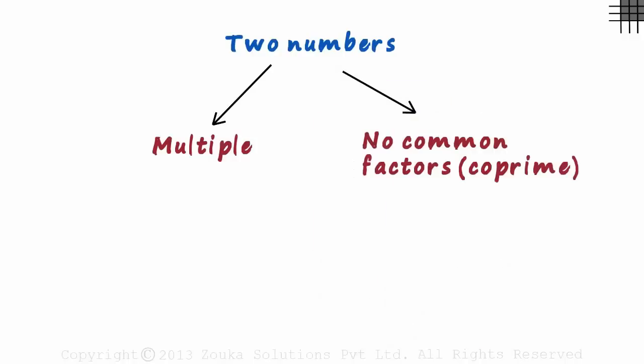And second, when they have no common factors except one, which means they are co-prime. Let's understand the cases in detail.